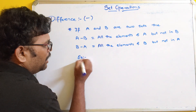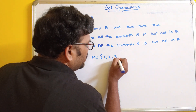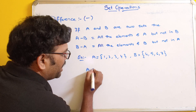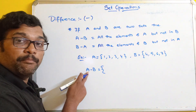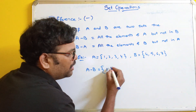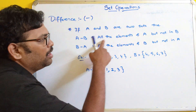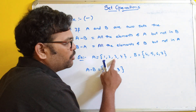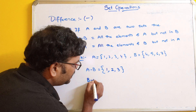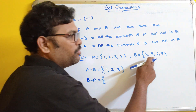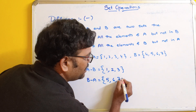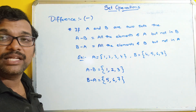For example, let A = {1, 2, 3, 4} and B = {4, 5, 6, 7}. For A minus B, from the elements of A we remove any element also in B. Since 4 is in B, we exclude it. So A minus B = {1, 2, 3}. For B minus A, we take all elements of B but exclude those in A. Since 4 is in A, we exclude it. So B minus A = {5, 6, 7}. This is the difference operation.